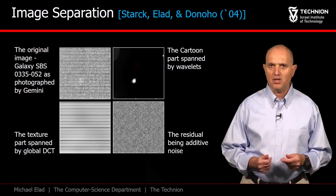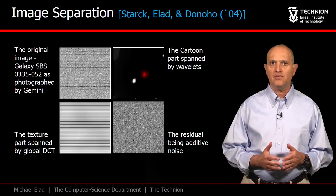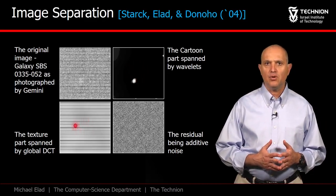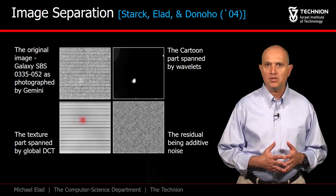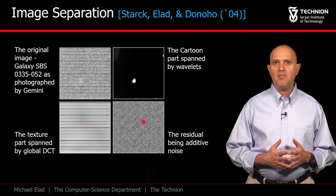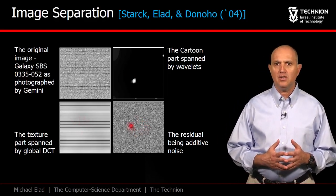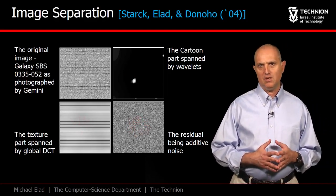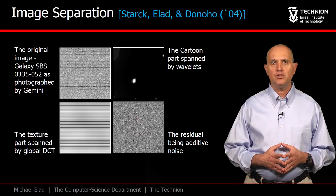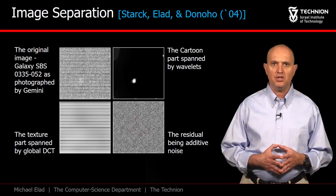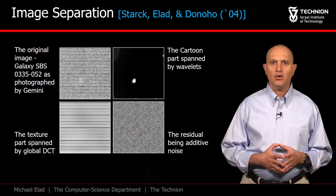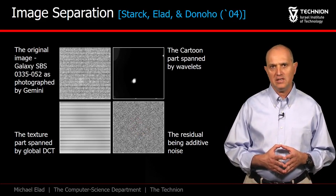In this separation, the cartoon part gives the clear view of the galaxy, the texture part captures all the structured noise, and the remaining content is the additive random noise. Sparsland was used here to achieve this separation, and the dictionaries involved rely on wavelet and DCT.